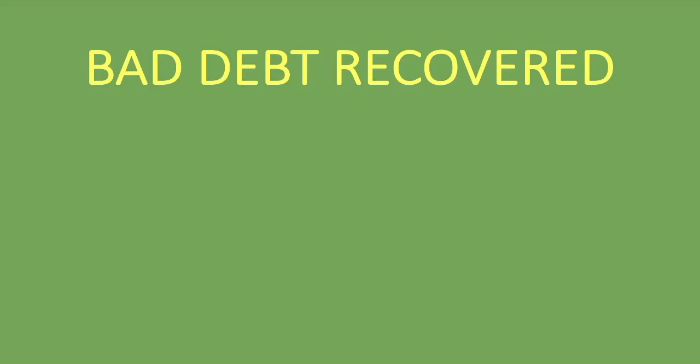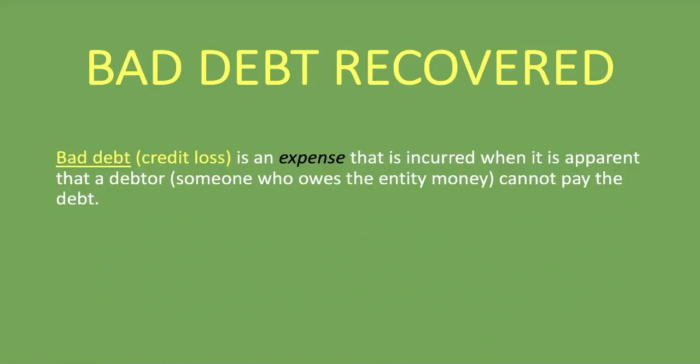Welcome to Counters. In this lesson we're going to be looking at bad debt recovered. We've looked at a couple of lessons on bad debt — how to account for it and how to do a journal entry. Bad debt, or credit loss, is an expense that is incurred when it is apparent that a debtor — someone who owes the entity money — cannot pay the debt. When you're told that someone is not able to pay off the debt anymore, you write them off as bad debt or credit loss, which is an expense account.